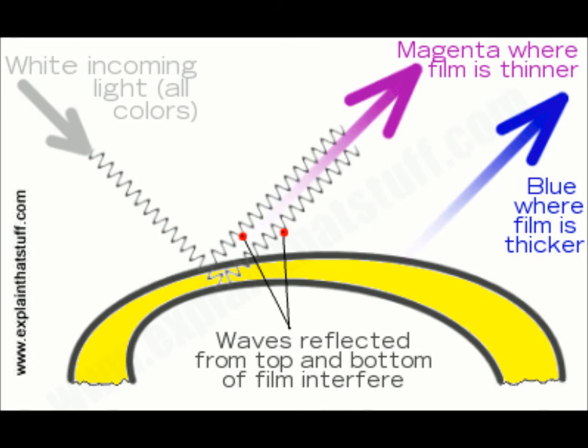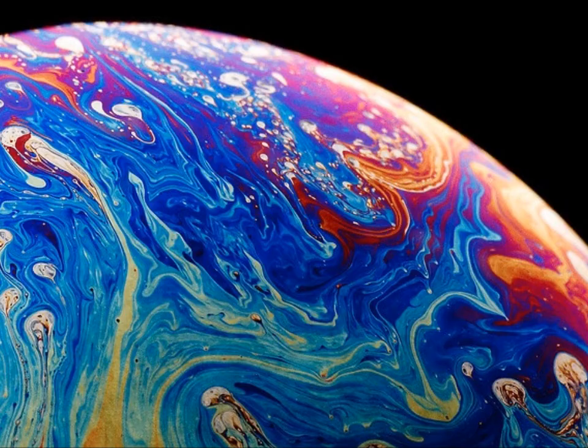Thick walls cancel out longer wavelengths in the red range. As the film thins, yellow, green, and eventually blue wavelengths are canceled out. So that was the basic physics behind bubbles. I hope you enjoyed the video. Thanks for watching!